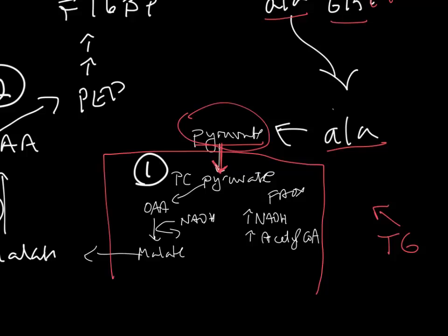Fatty acids also come to the liver, and they go through the process of beta-oxidation or fatty acid oxidation. This generates an increase of NADH and an increase of acetyl-CoA. These are the regulators for the gluconeogenic pathway.